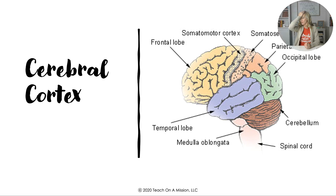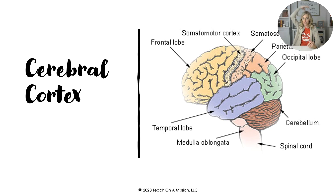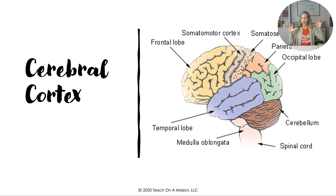For the cerebral cortex, starting from the front: the frontal lobe controls higher-order thinking, judgment, and personality — remember Phineas Gage. Behind that is the motor cortex (somatomotor cortex), controlling body movement. The parietal lobe controls pain perception and feeling, with the somatosensory cortex. At the very back, the occipital lobe contains the visual cortex — bonk the back of your head and you see stars. Around your ears is the temporal lobe, which controls hearing and language comprehension, including Wernicke's and Broca's areas on the left side.